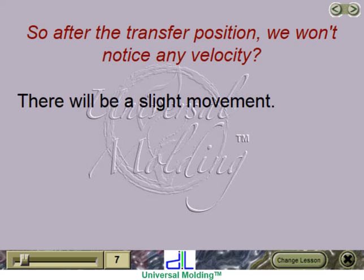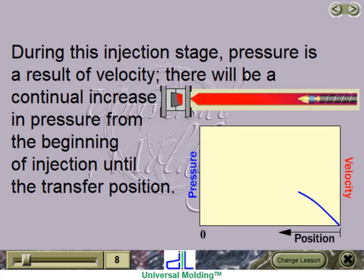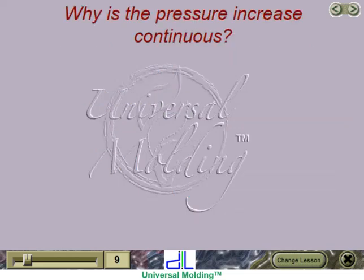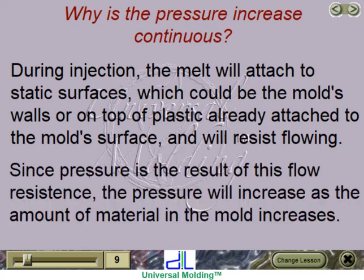There will be a slight movement. After the transfer position, we must fill the remaining amount — less than 5% — meaning we will observe a minimal velocity. During this injection stage, pressure is a result of velocity. There will be a continual increase in pressure from the beginning of injection until the transfer position. During injection, the melt will attach to static surfaces — the mold's walls or on top of plastic already attached — and will resist flowing. Since pressure is the result of this flow resistance, pressure will increase as the amount of material in the mold increases.